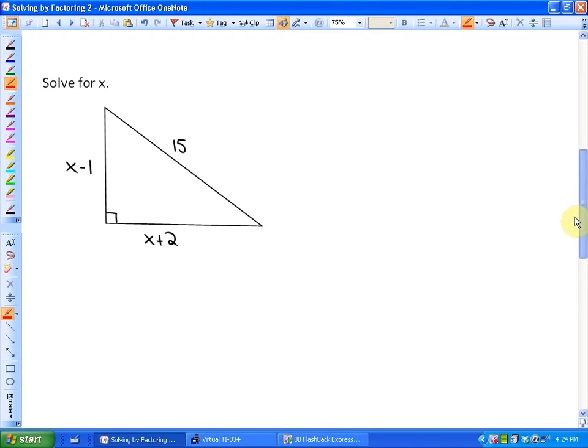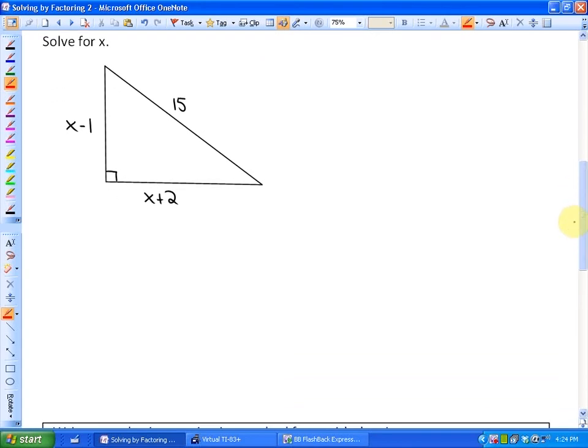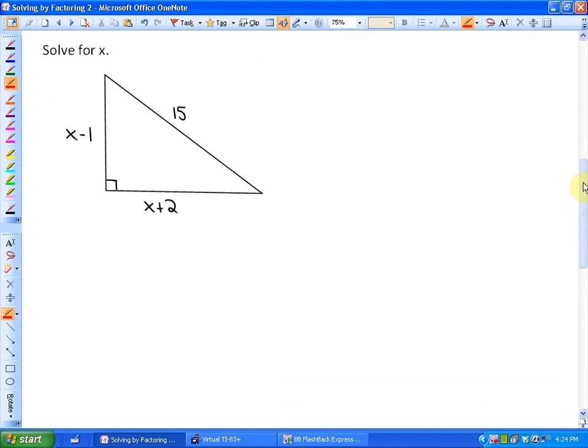In our next example, we're going to have to set up a quadratic equation before we even start solving. In this particular case, what we know is, if we call this side a, b, and c, we know that a squared, from the Pythagorean relationship, plus b squared is equal to c squared. Or in other words, we know that x plus 2 squared plus x minus 1 squared is equal to 15 squared.